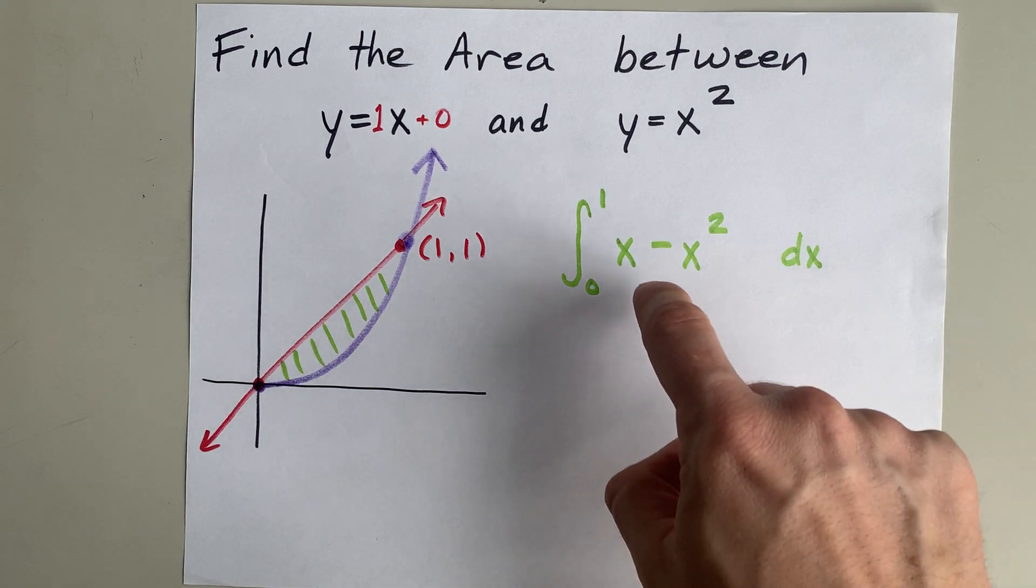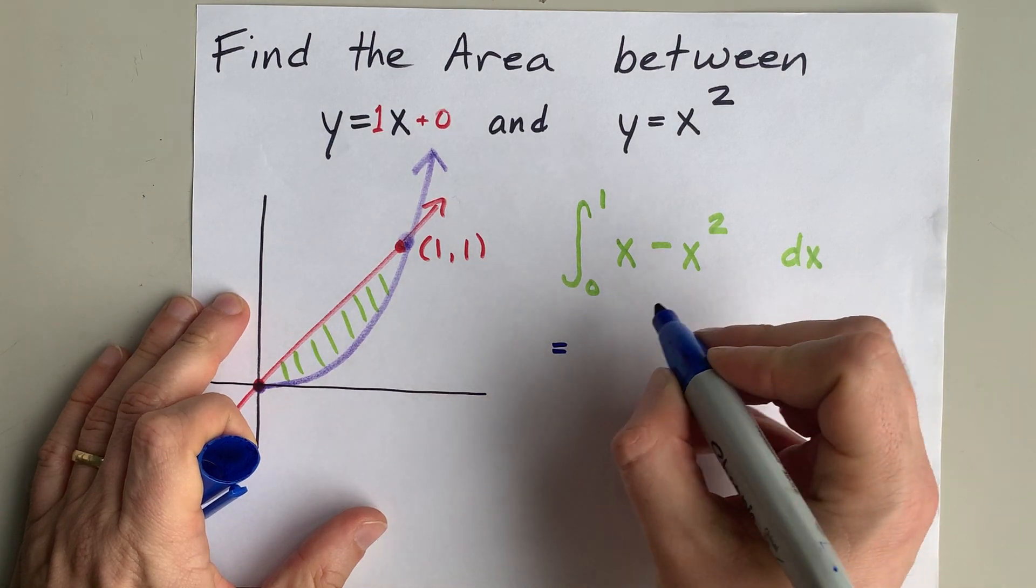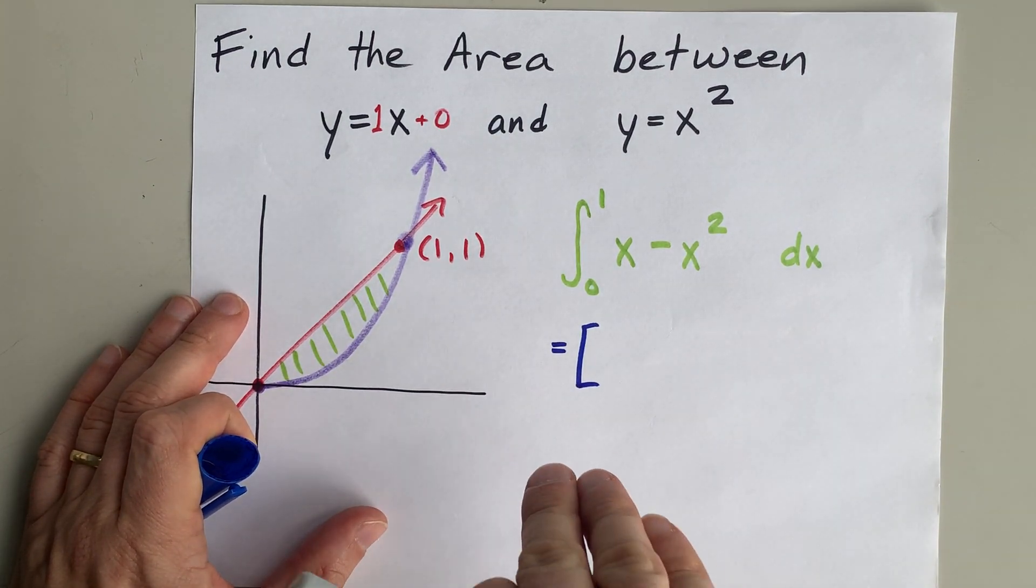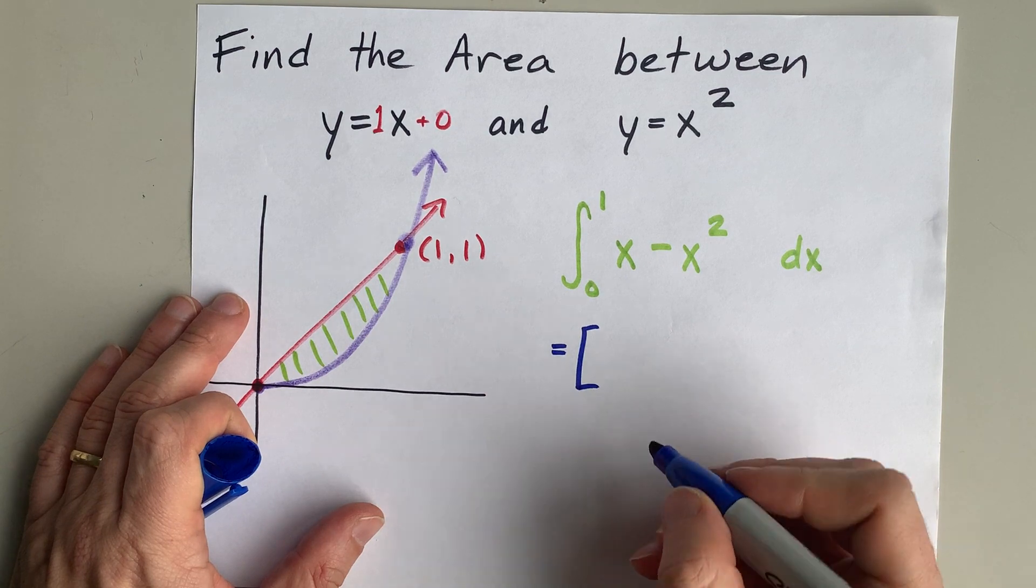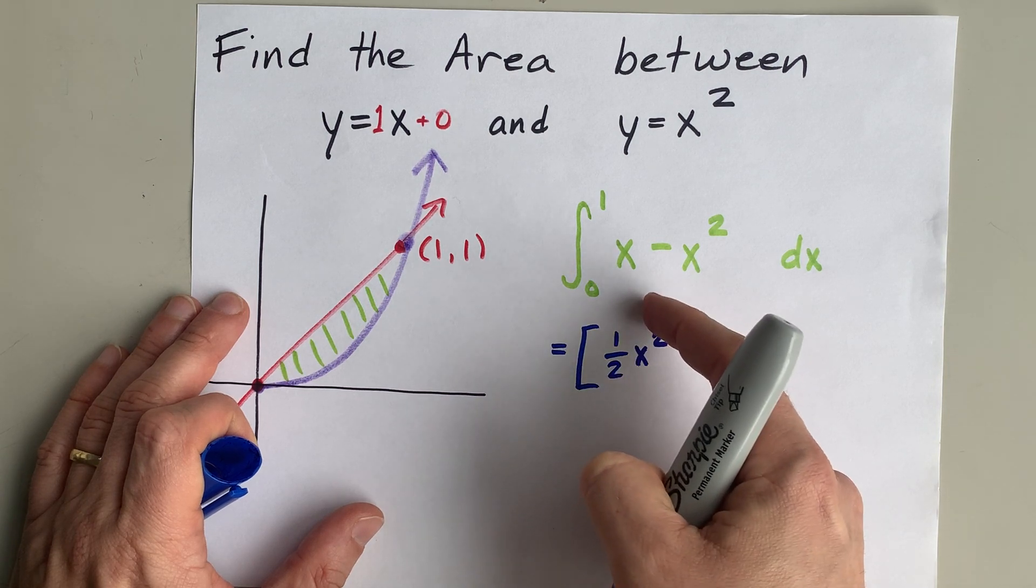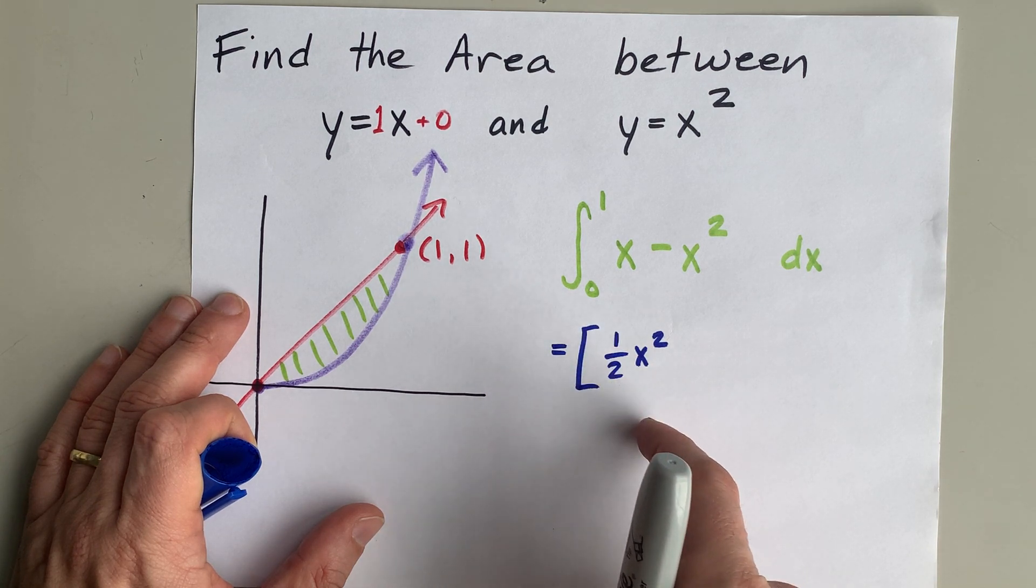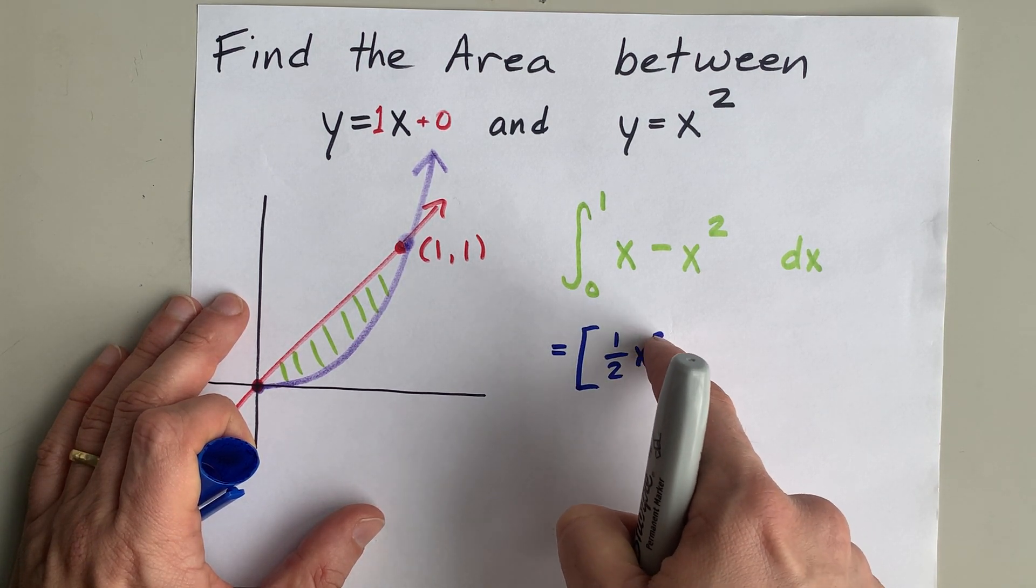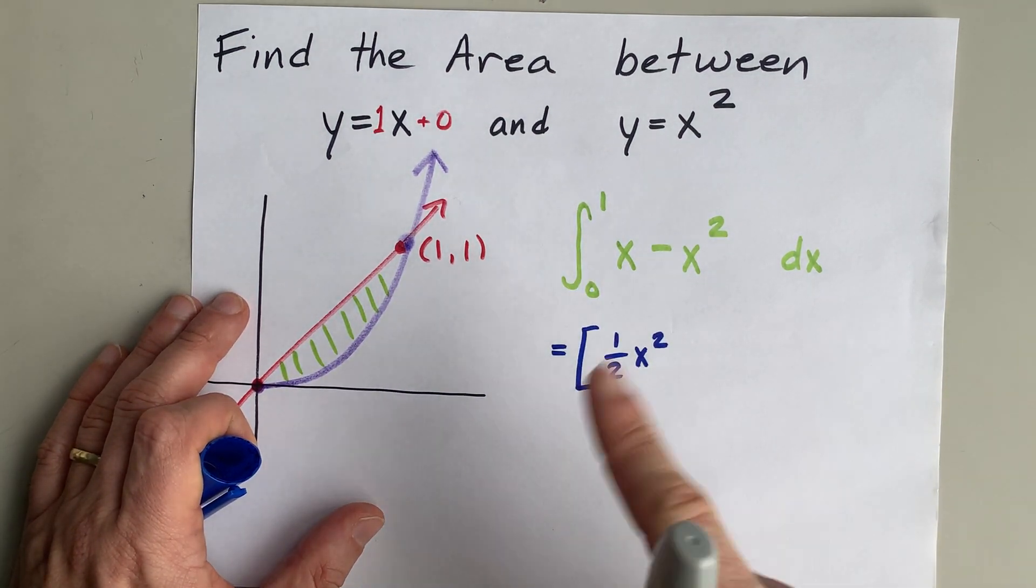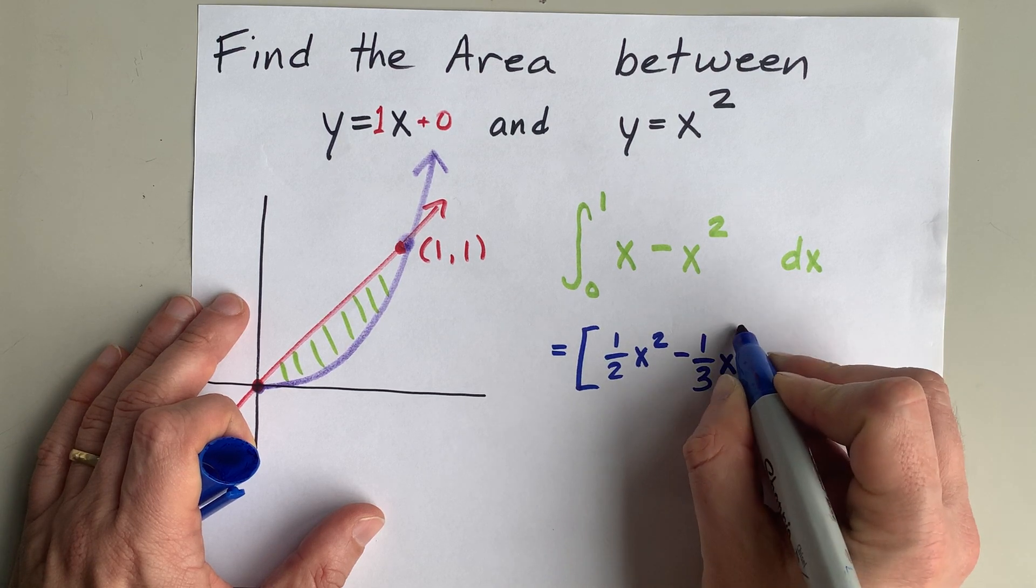Do you remember how to take the integral of x and x squared? Well, I do, and I'll show you what I mean. The integral of x is asking you, what would you take the derivative of to give you x as an answer? And the answer is 1 half x squared. The derivative of this uses the power rule, 2 comes down to multiply in here, 2 times 1 half is 1, and then that exponent gets notched down by 1, so you have 1x to the power of 1, which is just x. And similarly, can you integrate x to the power of 2?